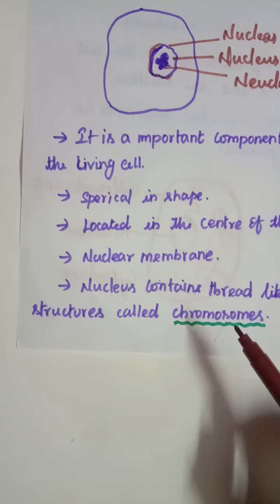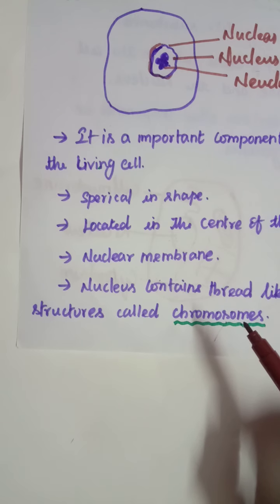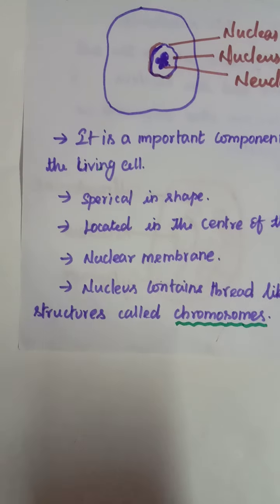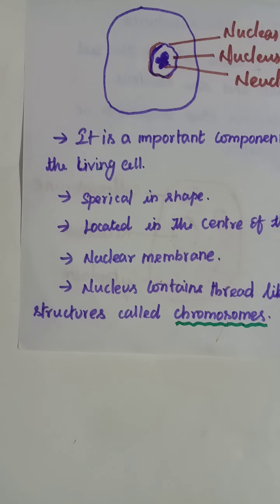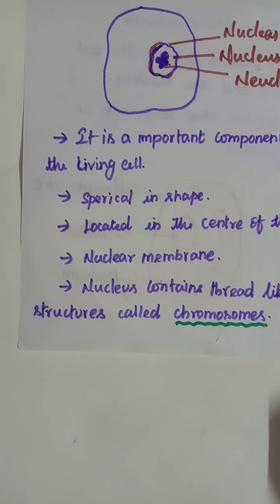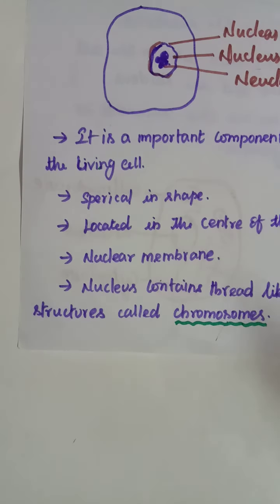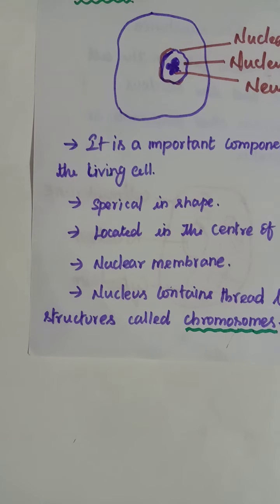Chromosomes can be seen only when the cell divides. The nucleus, in addition to its role in inheritance, acts as the control center of the activities of the cell. The entire content of the living cell is known as protoplasm — it includes the cytoplasm and the nucleus. This protoplasm is called the living substance of the cell.